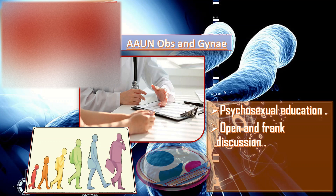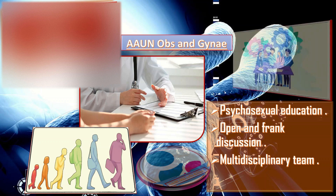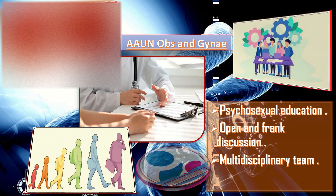We should have an open and frank discussion about all these issues with the patient. Third is the multidisciplinary team approach. These discussions need to begin as soon as ambiguous genitalia is discovered, and are ideally performed by a multidisciplinary team that includes representation from pediatric endocrinology, pediatric urology or surgery, genetics, and mental health. With this team of doctors, complete management should be discussed alongside and with the patient.